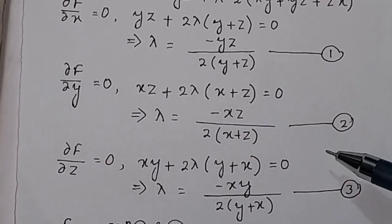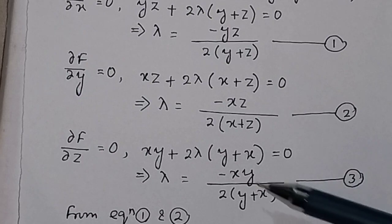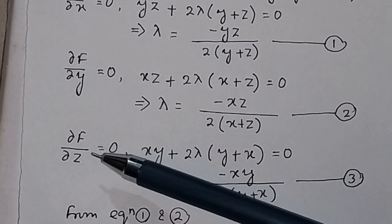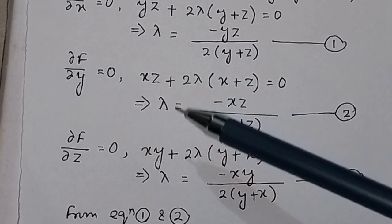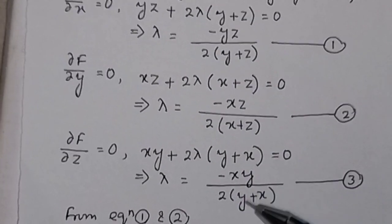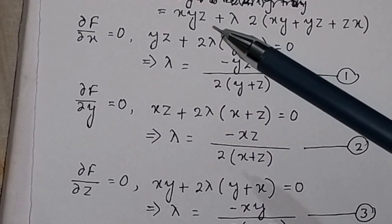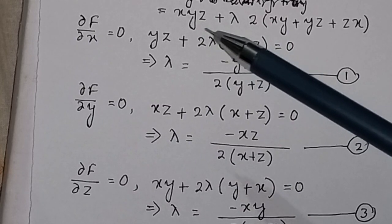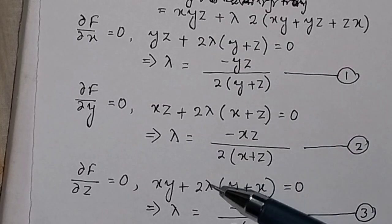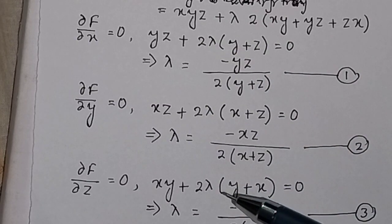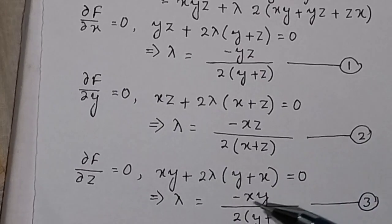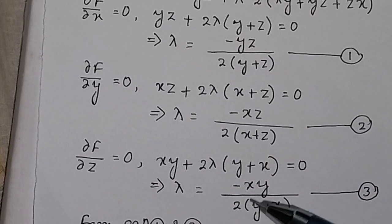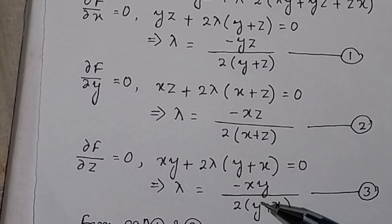Taking the partial derivative of the function with respect to z and setting it equal to 0 gives: xy + 2λ(y + x) = 0, so λ = −xy / 2(y + x). Call this Equation 3.